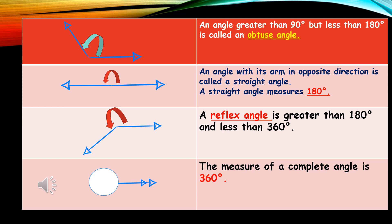An angle greater than 90 degrees but less than 180 degrees is called an obtuse angle. Whereas an angle with its arms in opposite directions is called a straight angle. A straight angle measures 180 degrees.